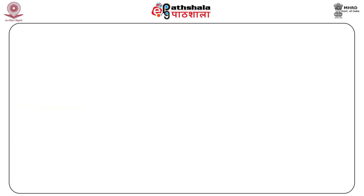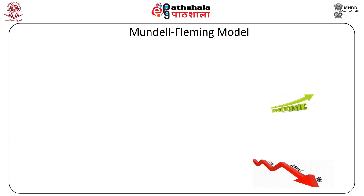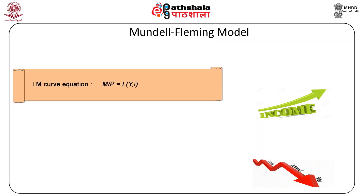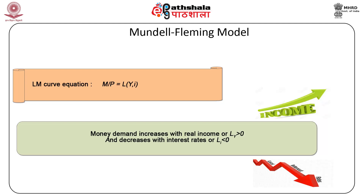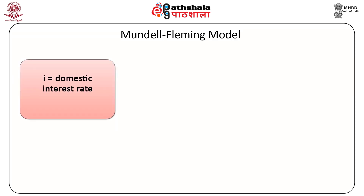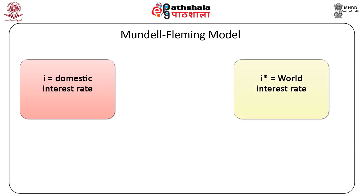The second equation characterizing the Mundell-Fleming model shows equilibrium in the money market, or the LM curve: M/P = L(Y, i), where M is nominal money supply. Note that money demand increases with real income (L_Y > 0) and decreases with interest rates (L_i < 0). The third equation characterizes the perfect capital mobility case for a small open economy: domestic interest rates are determined by world interest rates, or i = i*, where i is the domestic interest rate and i* is the world interest rate.